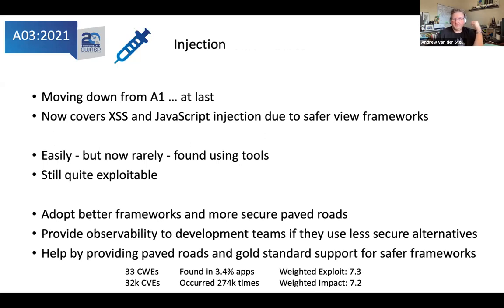Injection is finally falling down because people are using safer frameworks. They've moved to ORMs and entity frameworks which don't generally have bog-standard SQL injection. They're also using view frameworks with less cross-site scripting. We're starting to see that only 3.4% of apps are actually getting to the place where injections occur. When it happens it's really bad, which is why it's still ranked highly. We've got 32,000 CVEs in 2020 representing those CWEs.